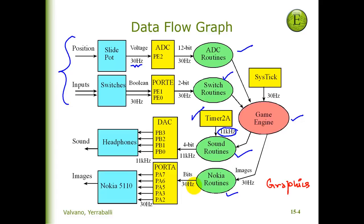The data flow graph also shows explicit hardware connections required to share your game with other students. To run your game engine with others: the slide pot connects to PE2, the two buttons connect to PE1 and PE0. The DAC for sound output must be on PB3, 2, 1, and 0. The Nokia display uses Port A — specifically PA2, 3, 5, 6, and 7. This standard allows everybody to play everybody else's game.